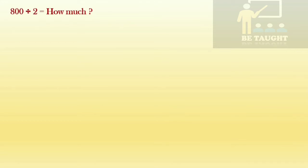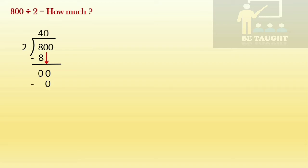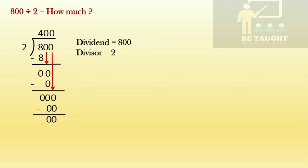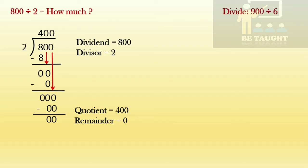Next: 800 divided by 2. Two fours are 8, eight minus eight is 0. Bring the zero down — two zeros are 0, zero minus zero is 0. Bring the remaining zero down — two zeros are 0, zero minus zero is 0. When we divide 800 by 2: dividend = 800, divisor = 2, quotient = 400, remainder = 0.